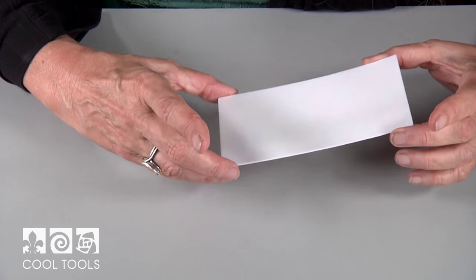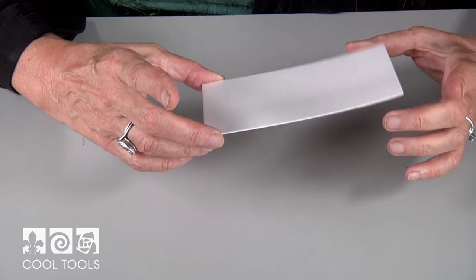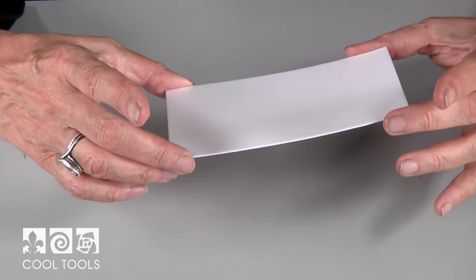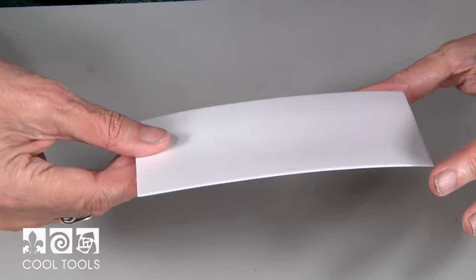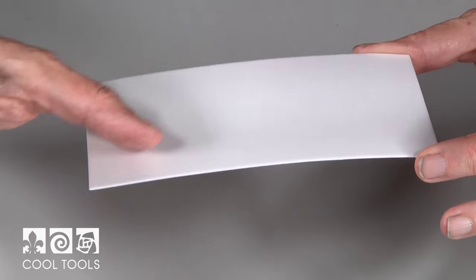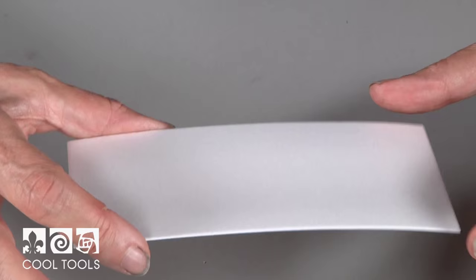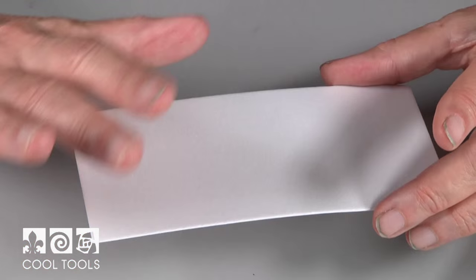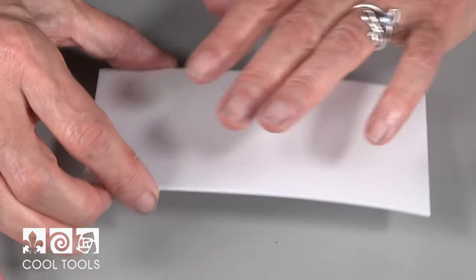Now if you look carefully at the scratch foam, which is really basically just compressed foam, one side is a little smoother and shinier than the other. That is the side I prefer to use because it gives me a smoother line. So this is the side we're going to use.